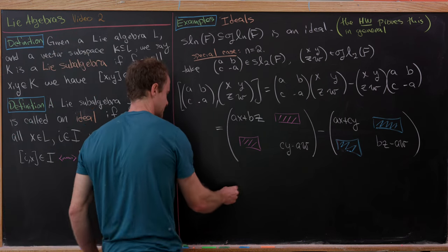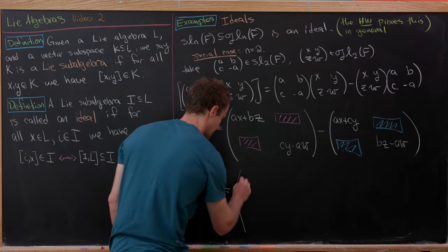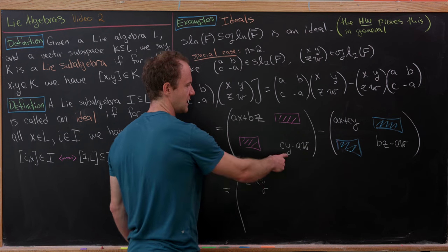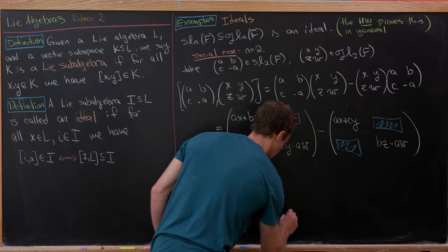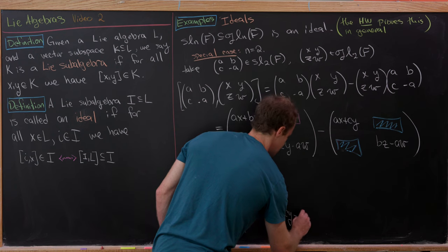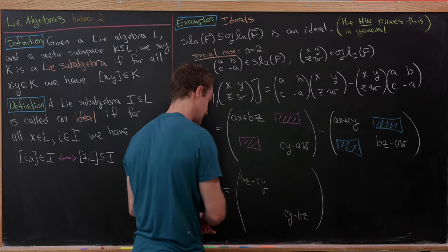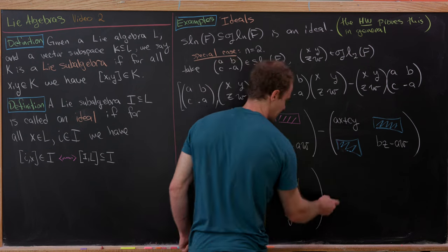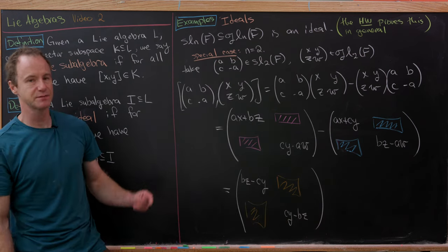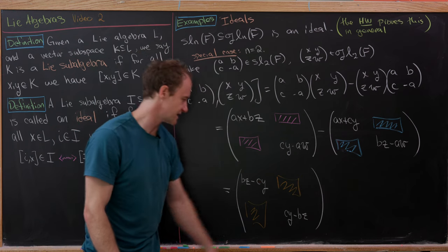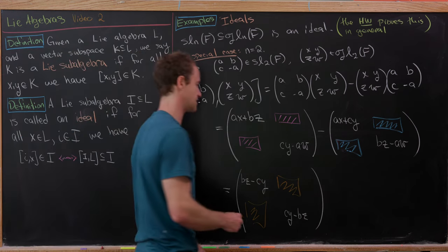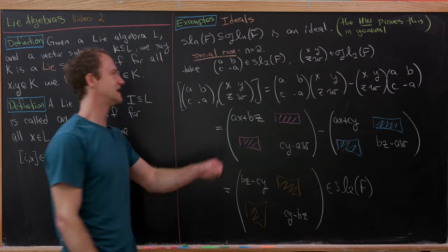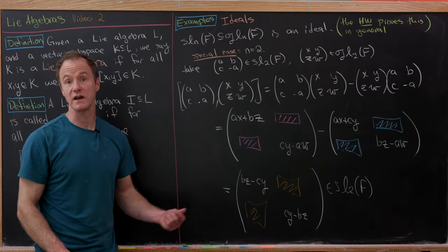Now we need to check that the trace is zero. But it's clear: adding the top-left entry bz-cy to the bottom-right entry cy-bz, the bz terms cancel and the cy terms cancel, giving trace zero. So we are in fact in sl(2,F), which is exactly the condition we needed to be inside of the ideal.